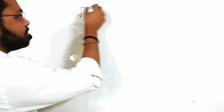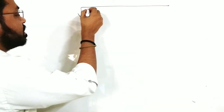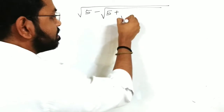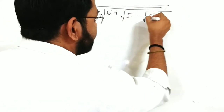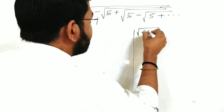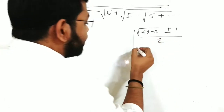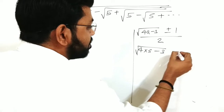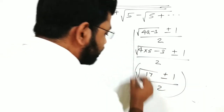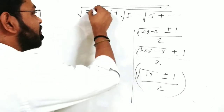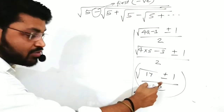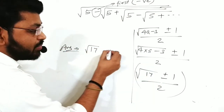For example: √(5 - √(5 + √(5 - √(5 + ...)))). The formula is (√(4a-3) ± 1)/2. With a=5: 4×5 - 3 = 17, so (√17 ± 1)/2. The first sign is minus, so the answer is (√17 - 1)/2. If first sign were plus, answer would be (√17 + 1)/2.